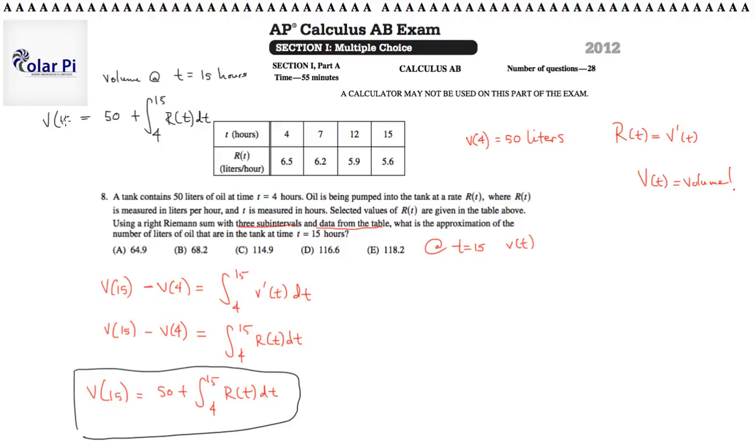So, 50 liters plus the change in volume from 4 to 15 together should get us v of 15. Notice that is the volume at t equals 15 hours. Notice that this is identical to this. Great.